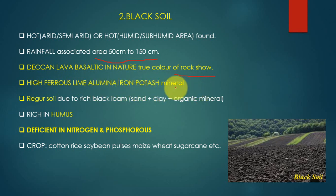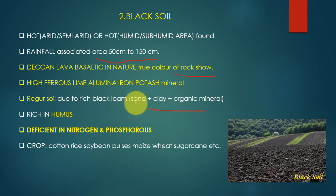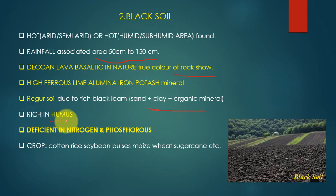Black soil is a firm and rich soil, also known as regur soil. Regur soil is rich black loam with a composition of sand, clay, and organic minerals. This soil retains moisture — it is a water-retaining soil that also provides humus. It is deficient in nitrogen and phosphorus.